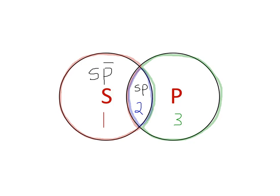And so in region three, we have the P class, but not the S class, because this is the area where members of the P class are, but they're not in the area where the S class is. So it excludes the S class, but includes the P class.